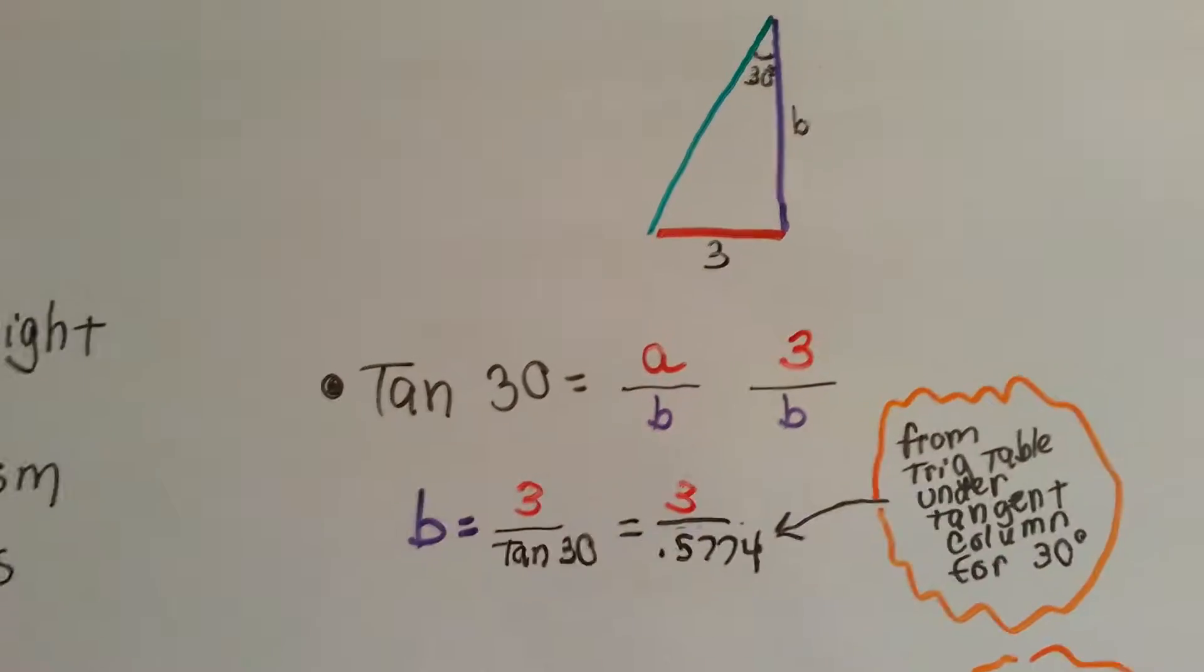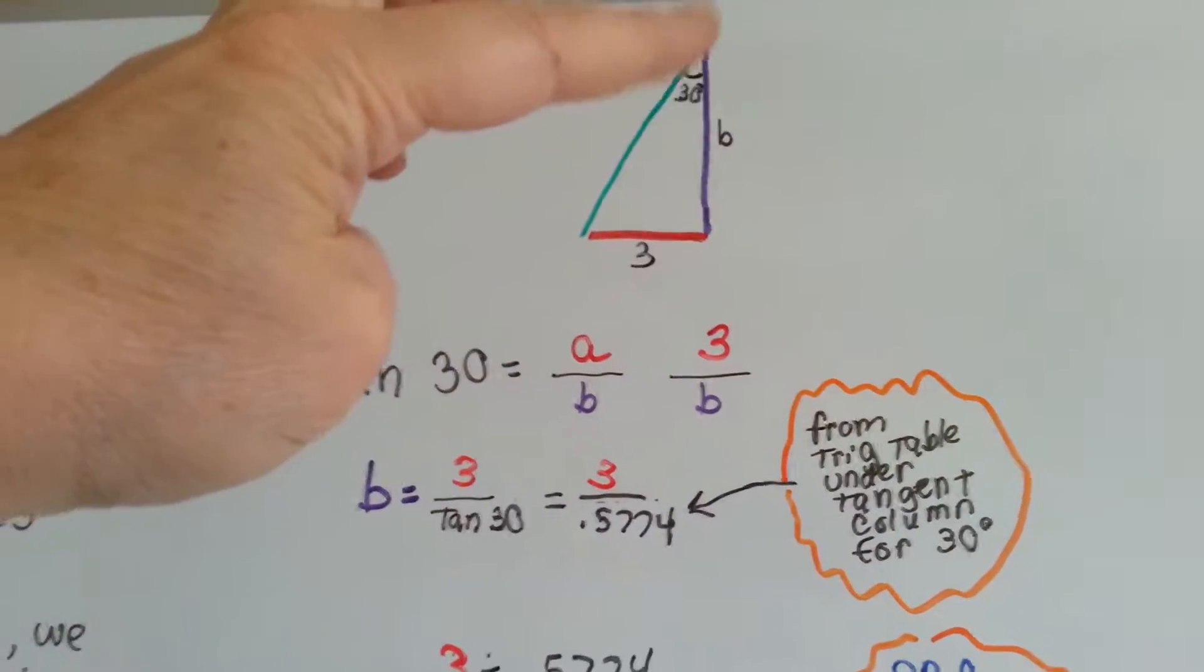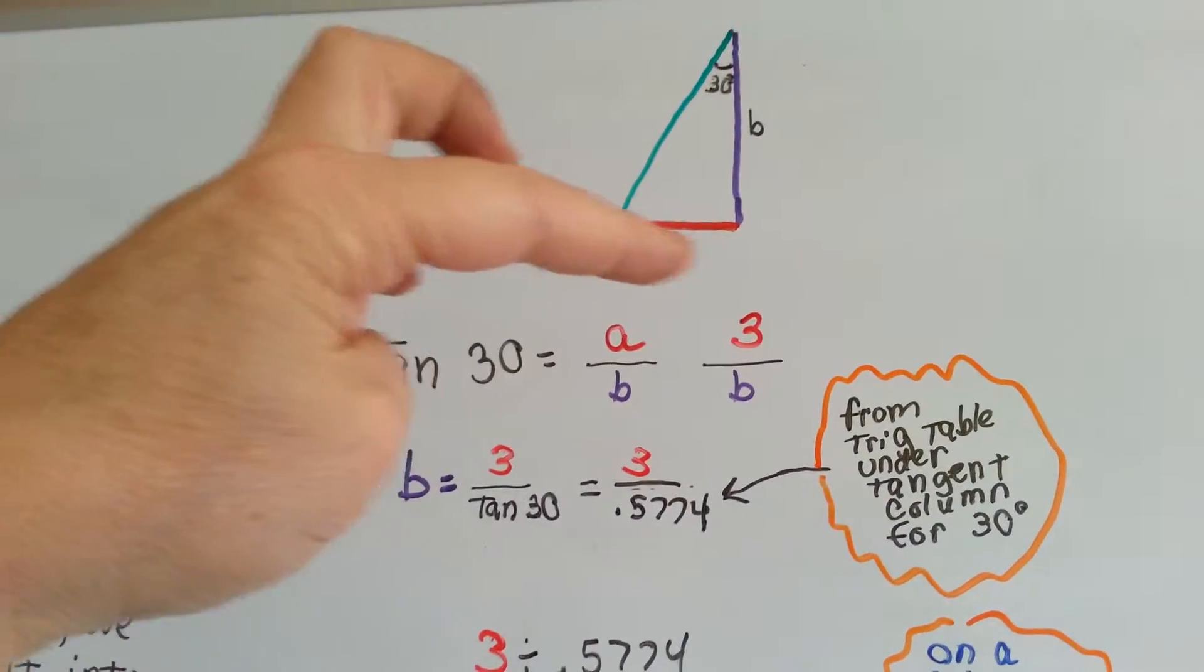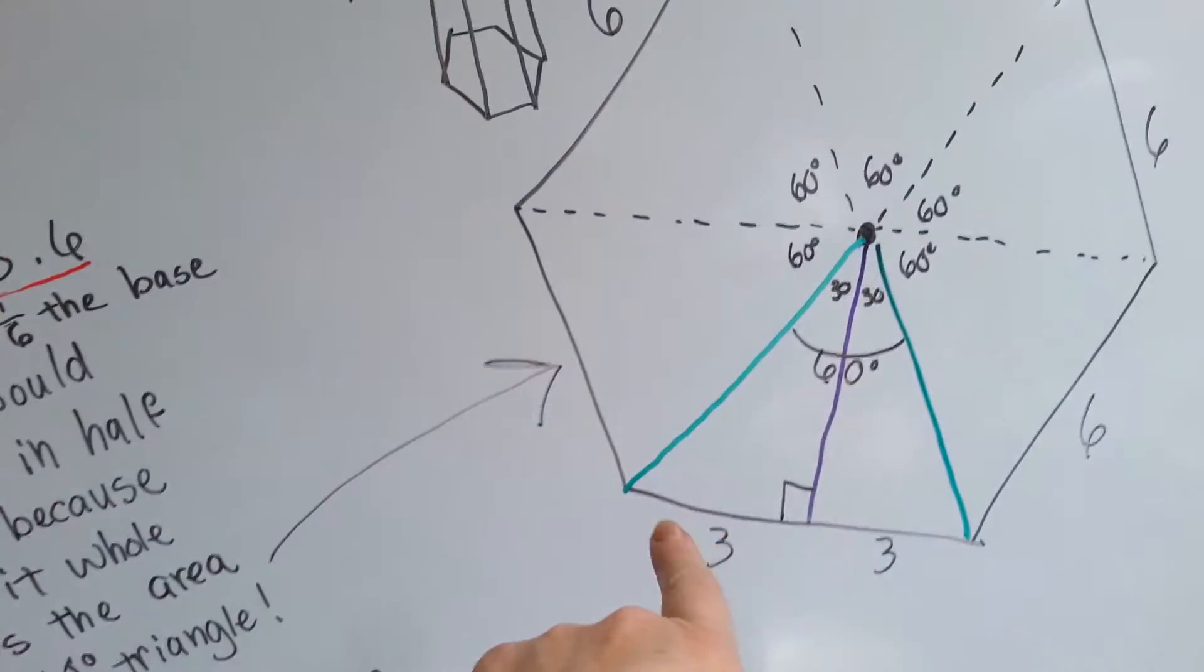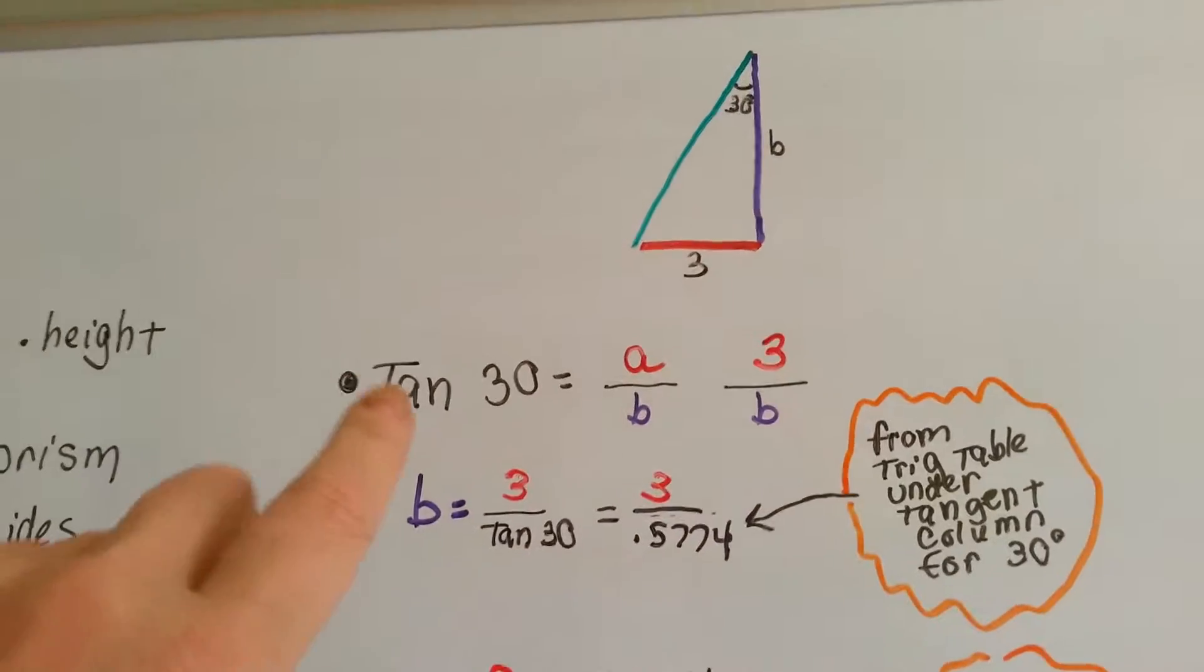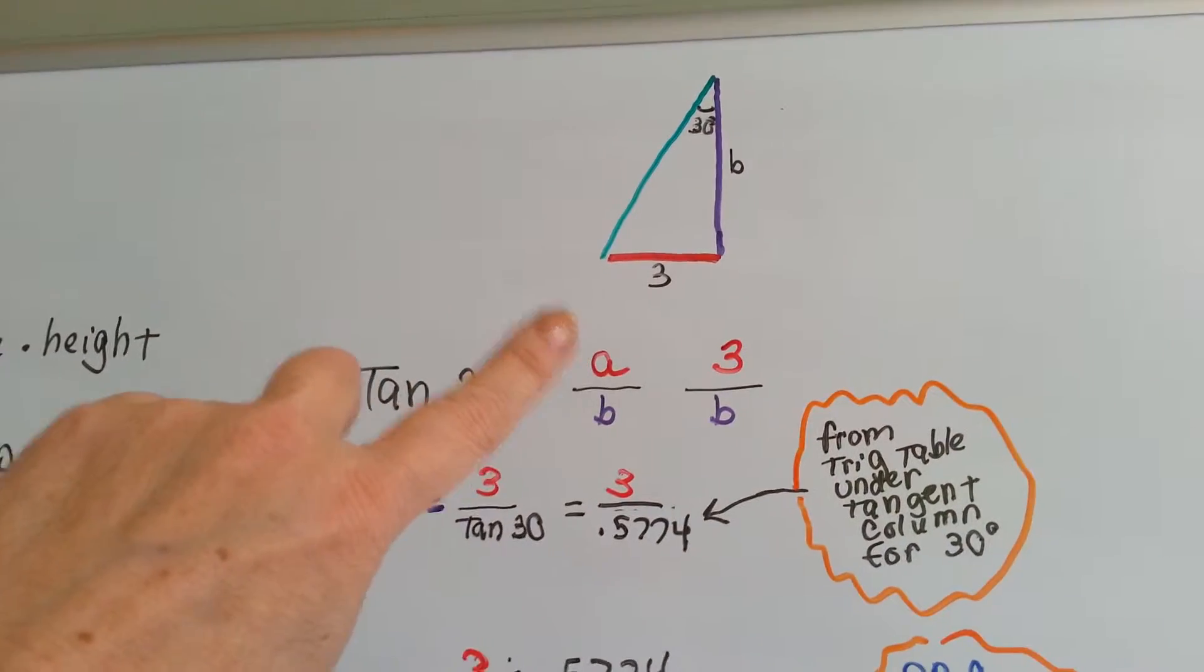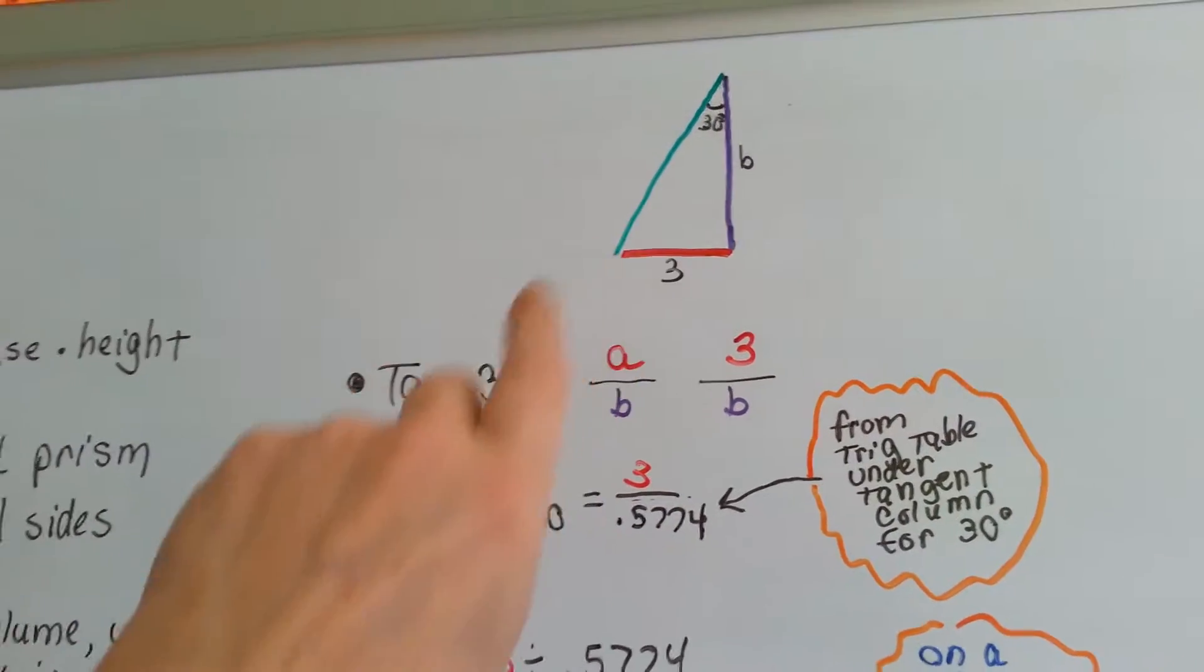If you know your tangent ratios, we've got a 30 degree angle here, an unknown adjacent apothem, and we know that our opposite is 3. And why is that? It's because it's half of the six, see? Because it's split in half. So I hope you're following me here. We have tangent 30 is equal to opposite over adjacent, right? So 3 over b.